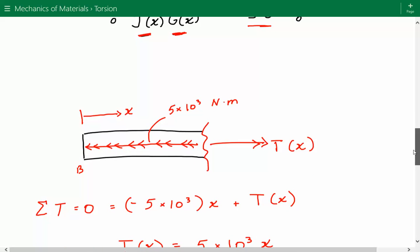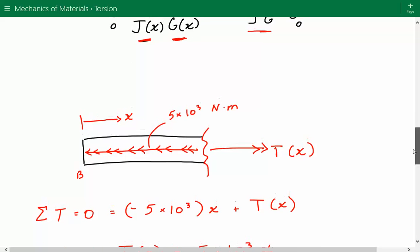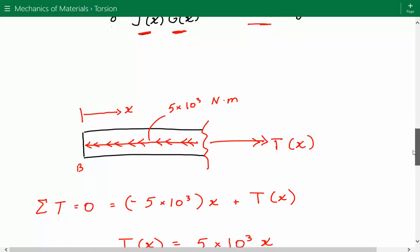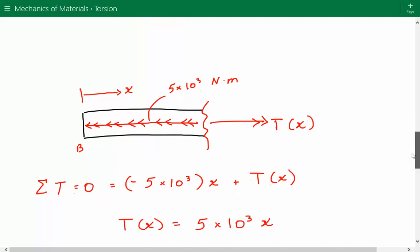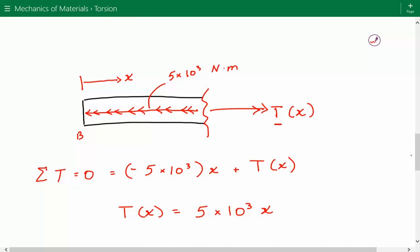I've drawn this free body diagram. I took a sectional cut along the shaft at an arbitrary location and show the internal torque in the positive direction using the right-hand rule. We have the external torque acting, so we sum the torques. When we sum the torques, it equals negative 5 times 10 to the third times x plus the internal torque. So the internal torque equals 5 times 10 to the third times x.